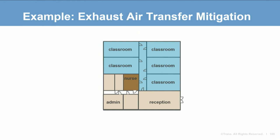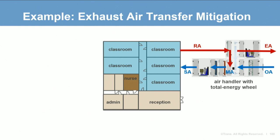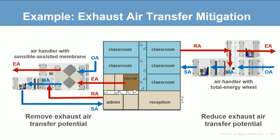Sometimes different thresholds apply in the same building. For example, in an elementary school building, classrooms making up the majority of floor space are served by an air handler with a total energy recovery wheel, designed to reduce exhaust air transfer potential by configuring the air handler to achieve the desired pressure differential. However, for the administrative areas — reception and nurse station — the owner requested to remove the potential for exhaust air transfer, so this area is served by an air handler with a SAM exchanger with exhaust drawn from the nurse station.